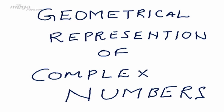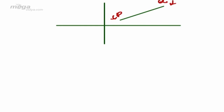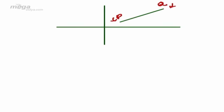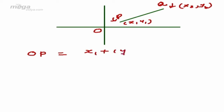Geometrical representation of the complex numbers. Let us come to the Argand plane. We take a line PQ. The P vertex is denoted by (X1, Y1) and Q vertex is denoted by (X2, Y2). So the complex number OP, joining the point P to the origin, will be X1 + iY1. The complex number shown by line OQ will be X2 + iY2.